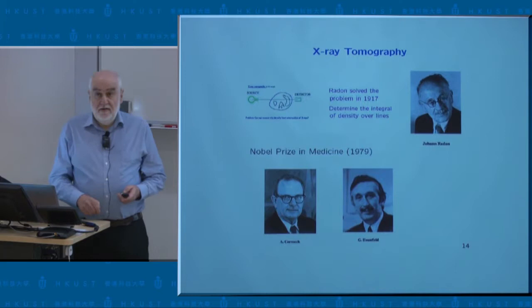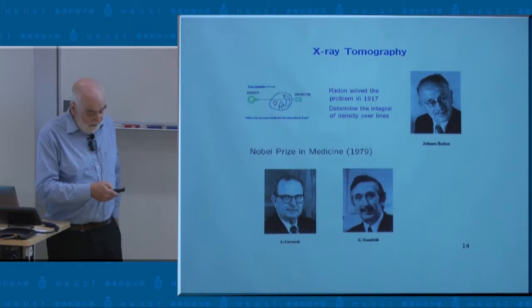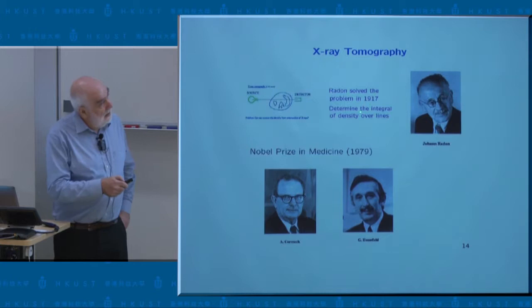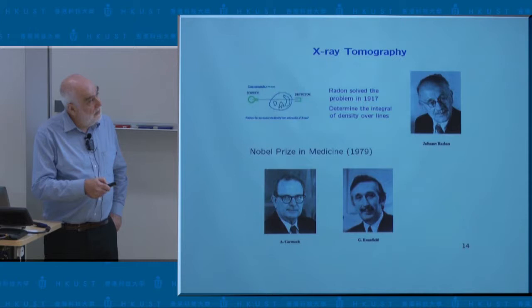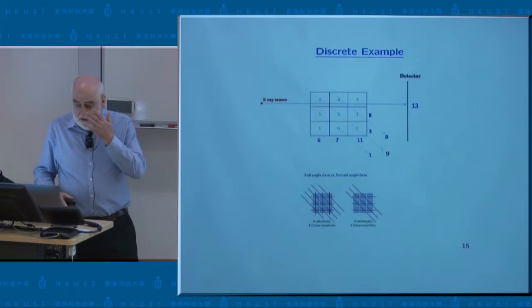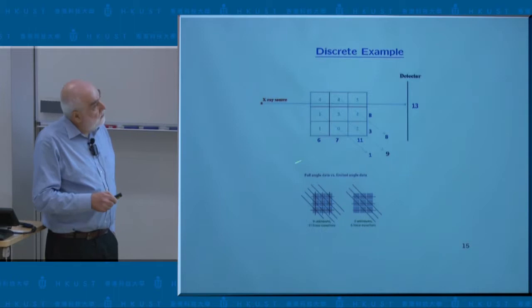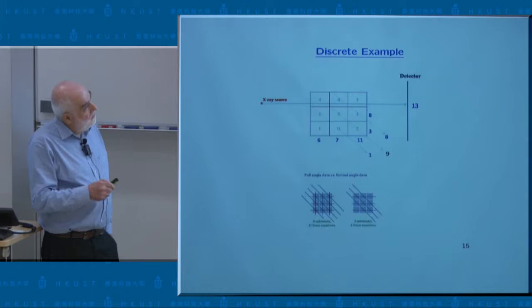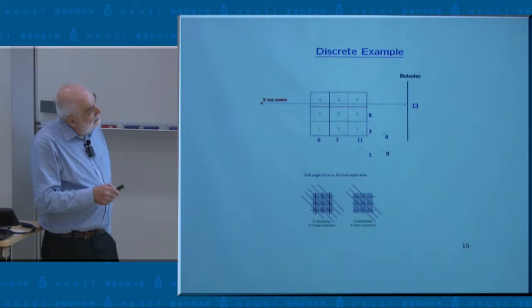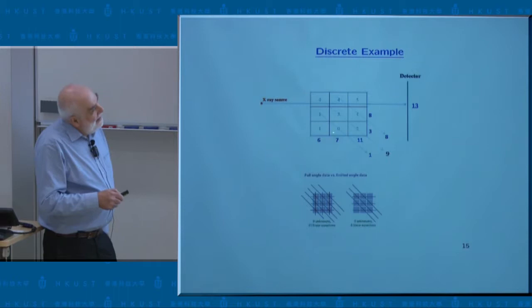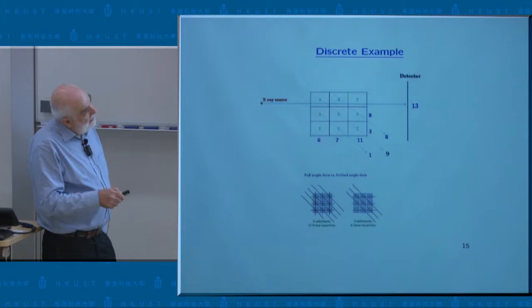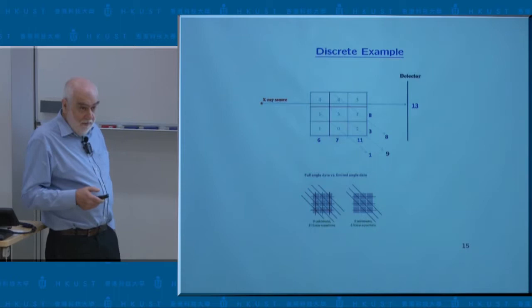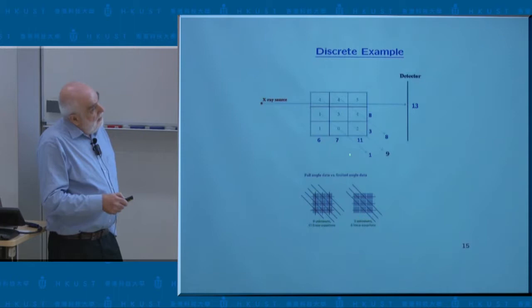This completely revolutionized medicine. Now you get very good detailed images of the inside of the body by using CT scans — you take a two-dimensional section and send X-rays in different directions. The method used in most CT scans is based on the formula found by Radon. A discrete example is like a form of Sudoku: you have numbers corresponding to different density of tissues, and here the X-ray source sends rays. What you can determine is the sum along lines — for instance, four plus five is thirteen. From those line sums you try to infer the numbers, but in practice you never have all the lines and it's an underdetermined problem.